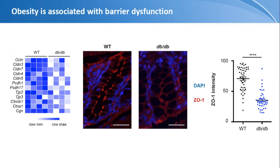We can go further and look in more detail at the intestinal barrier using RNA sequencing. Here we're quantifying the expression of ZO1, one of the main proteins involved in making a tight barrier in the gastrointestinal tract. You can see that the DBDB mouse is not only morbidly obese but has very poor barrier function in the GI tract.